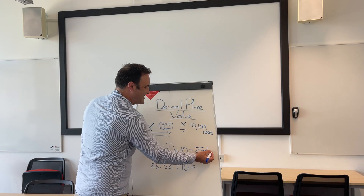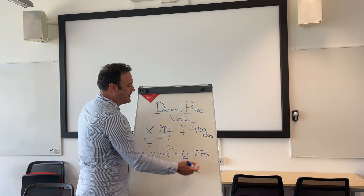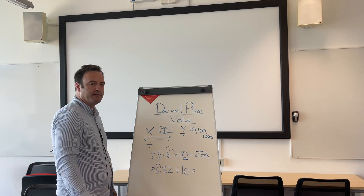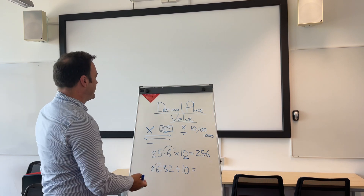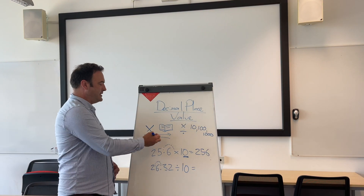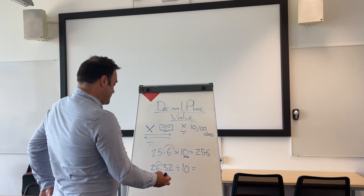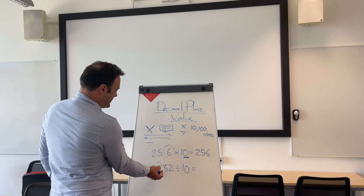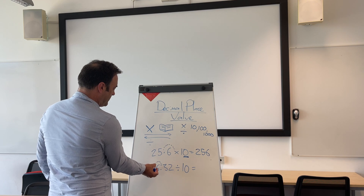A lot of kids will put a trailing decimal zero, but technically you don't need that if it's a whole number — if it's an integer. So the next thing is dividing. We say to children, when you divide it's the opposite way to the way you read and write. So with divide by 10, you can see the dot jumping over one place.